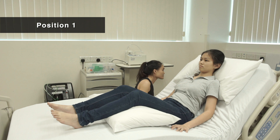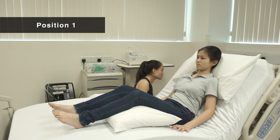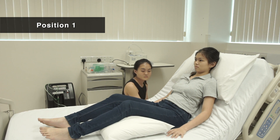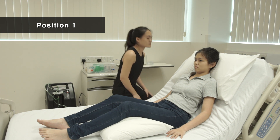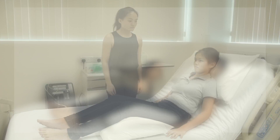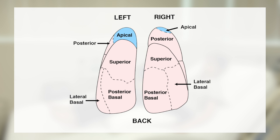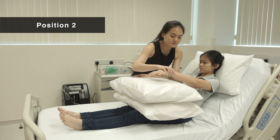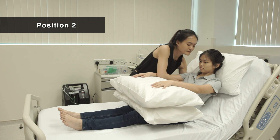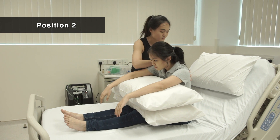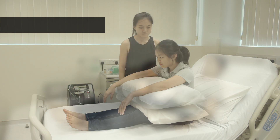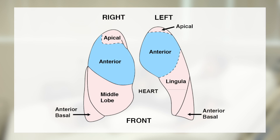Sit up in bed. Position 2 is for secretion at the back and top of both lungs. Position 3 is for secretion at the upper back and top of both lungs.